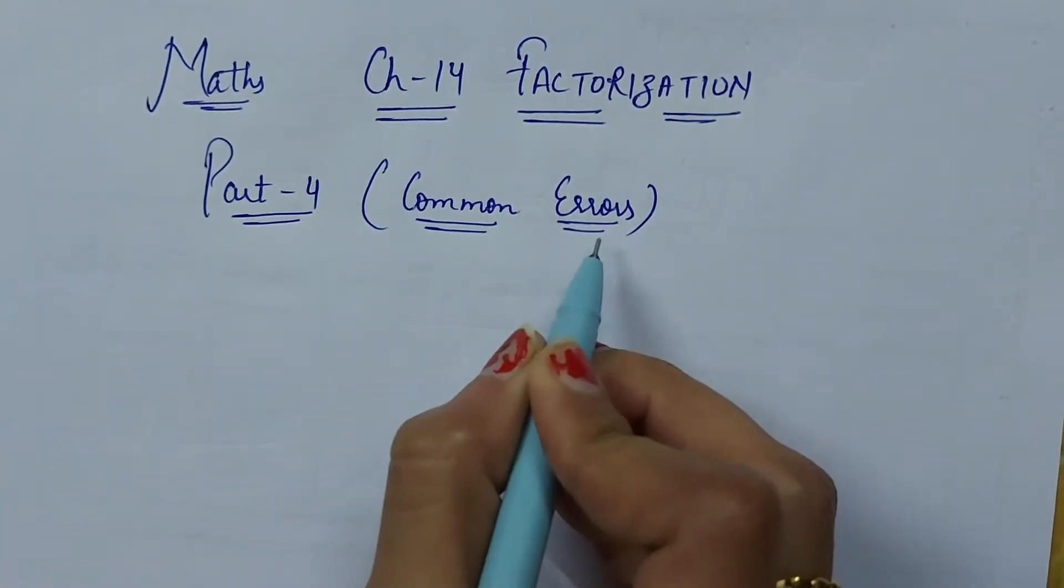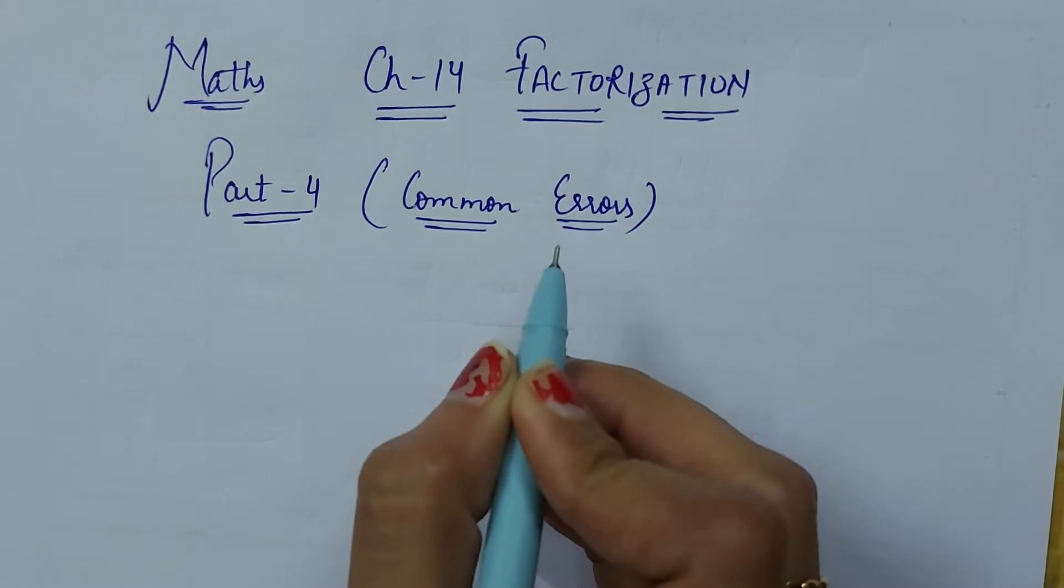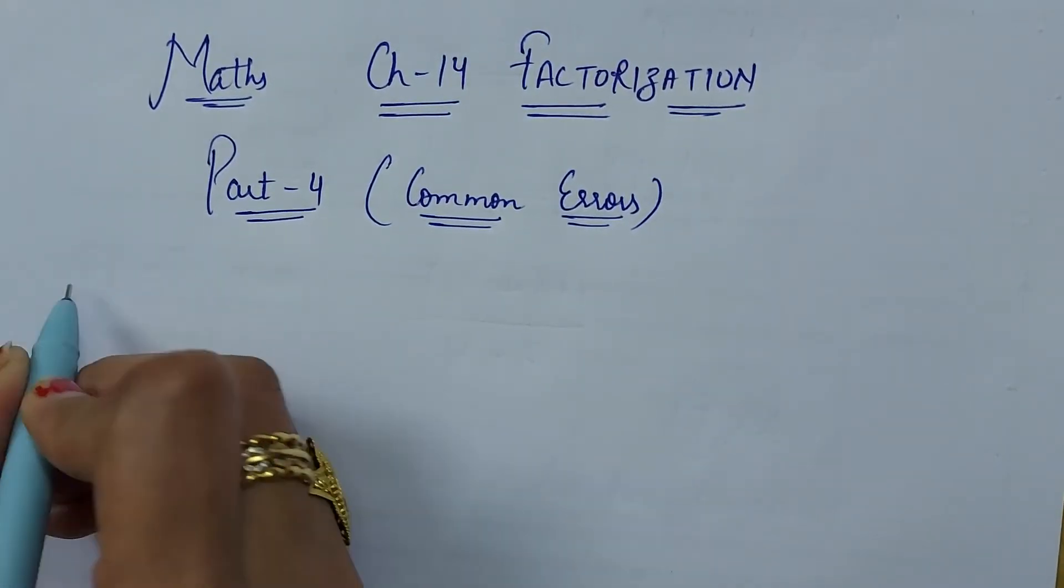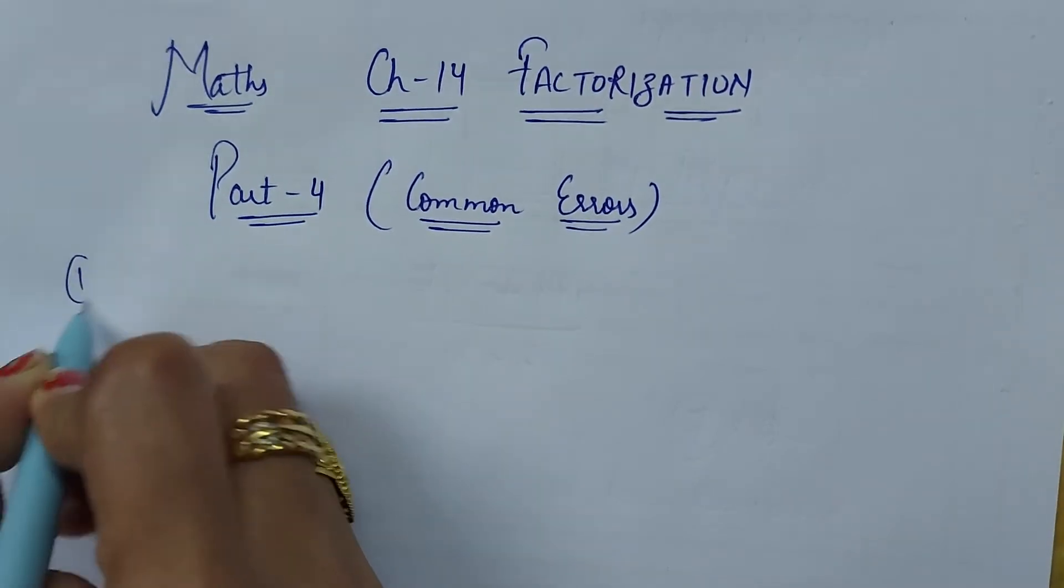Common errors. Common errors kya hote hai? Errors wo hai jo ki bachche aksar galtiyan karte hain. Jo ki main aapko examples mein samjha hoongi. What are the common errors?